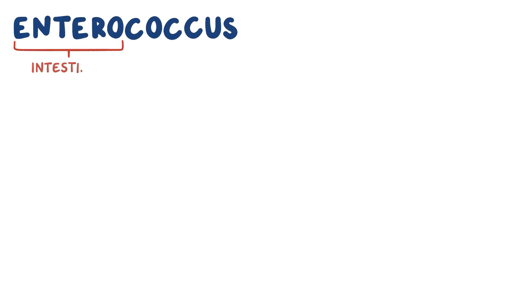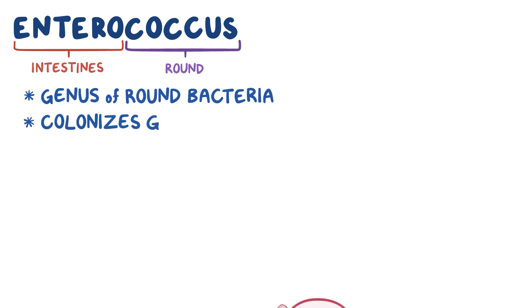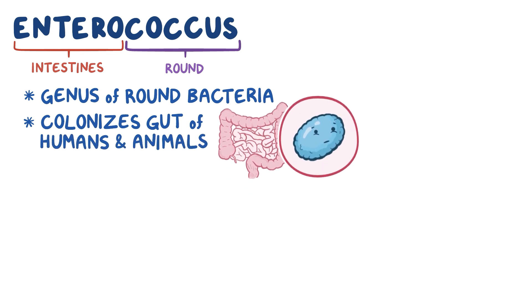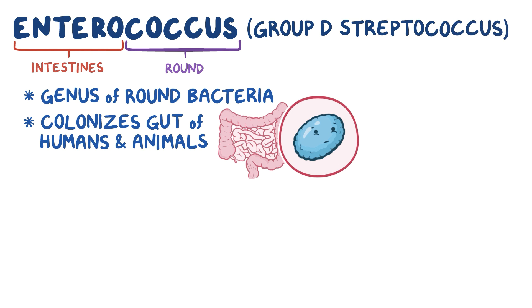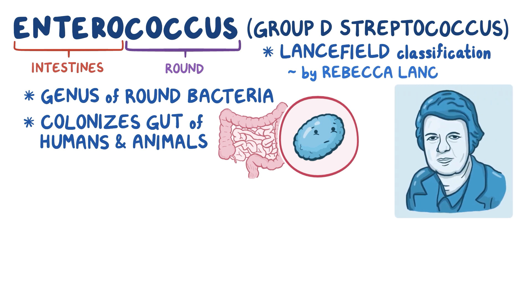With Enterococcus, entero refers to the intestines, while coccus means round-shaped. So Enterococcus is a genus of round bacteria that commonly colonizes the gut of humans and animals. Enterococcus is also called Group D Streptococcus, in Lancefield classification developed by American microbiologist Rebecca Lancefield.